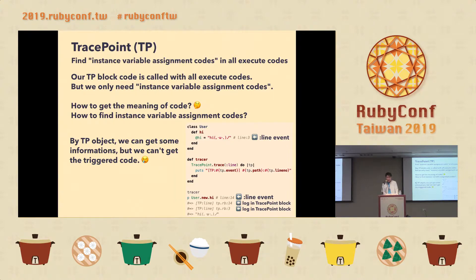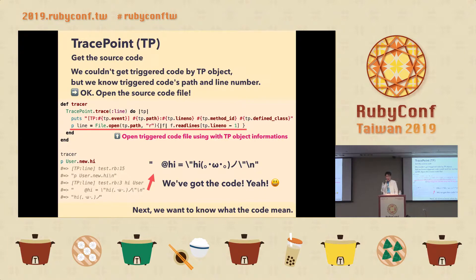Our TracePoint block triggers on all executed code, but we only need instance variable assignment code. How do we get the meaning of the code — how to find instance variable assignment code? By the tp object we can get some information, but we can't get the triggered code directly. However, we know the triggered code path and line number, so let's open the source file using File.open and get the triggered code.